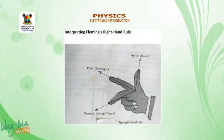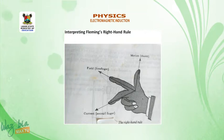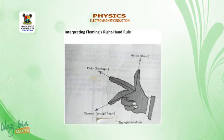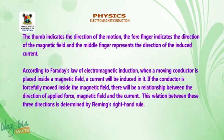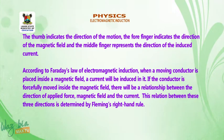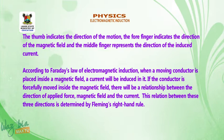Interpreting Fleming's right hand rule. Consider the diagram below. The thumb indicates the direction of the motion. The forefinger indicates the direction of the magnetic field. And the middle finger represents the direction of the induced current.